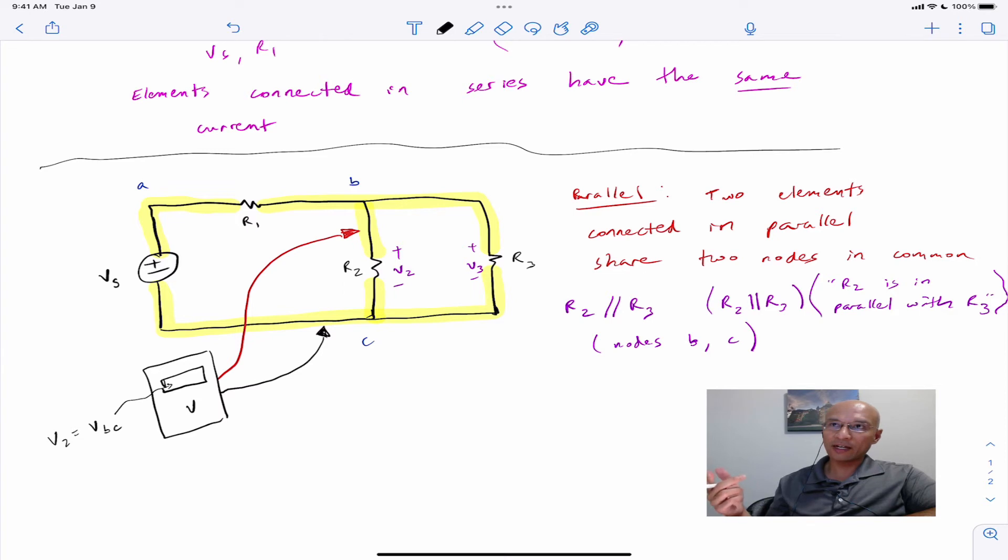So here's our voltmeter, and this one would be reading V2, which is the same as VBC. So if you haven't seen my video on double subscript notation or my video on voltage measurement, be sure you watch that. I'll put a link to that in the video description. Similarly, we could measure V3 as follows. Notice here that in both cases for V2 and V3, the reference node is connected to node C, and then the observation is taken at node B.